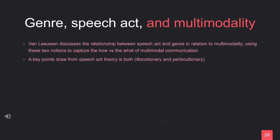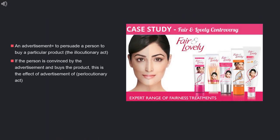Genre, speech act, and multimodality: Van Leeuwen discusses the relationship between speech act and genre in relation to multimodality, using these two notions to capture the 'how' versus the 'what' of multimodal communication. A key point drawn from speech act theory involves both illocutionary and perlocutionary acts. An advertisement may aim to persuade a person to buy a particular product — this is called the illocutionary act. If the person is convinced by the advertisement and buys the product, this is the effect of the advertisement, or the perlocutionary act.